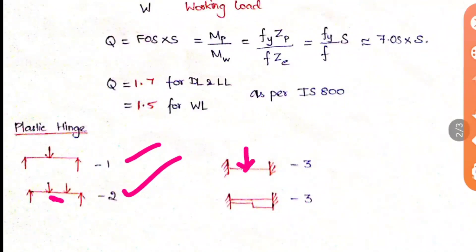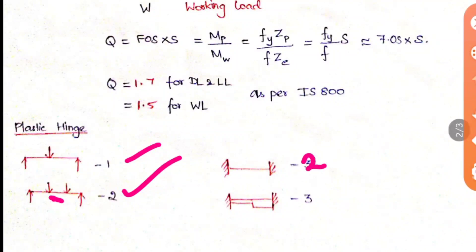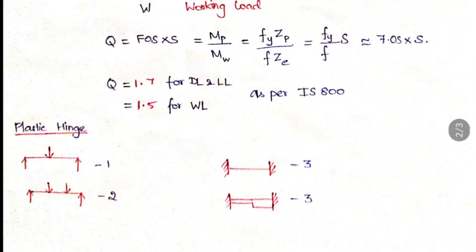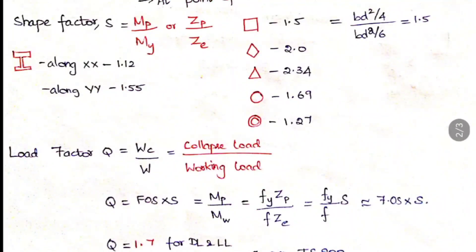In the third case — a fixed-fixed beam with a concentrated load — plastic hinges occur at both fixed supports and at the load point, giving three plastic hinges. If the load were not applied, the answer would be two. In the fourth case — a fixed beam with a varying cross section — a hinge occurs at the cross-section change and at each fixed support, giving three plastic hinges total.